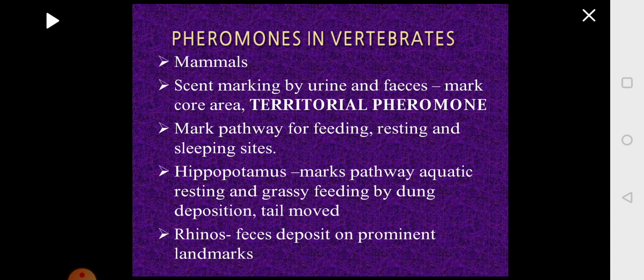Now we shall look at pheromones in vertebrates. In mammals, one important function is the marking of territory, called the territorial pheromone. They have special glands and sometimes pheromones can be released along with urine or feces. When released, it marks the core area where the animal is living so that other individuals will not be allowed to enter its home range or core area.